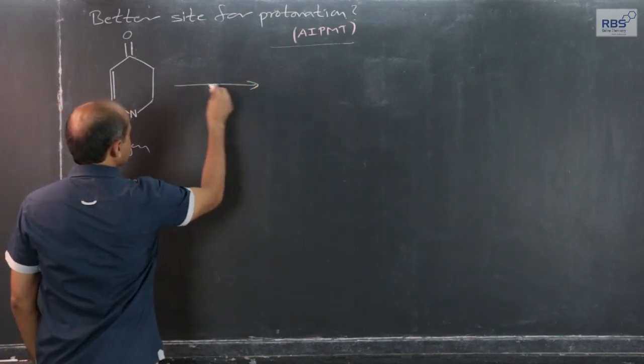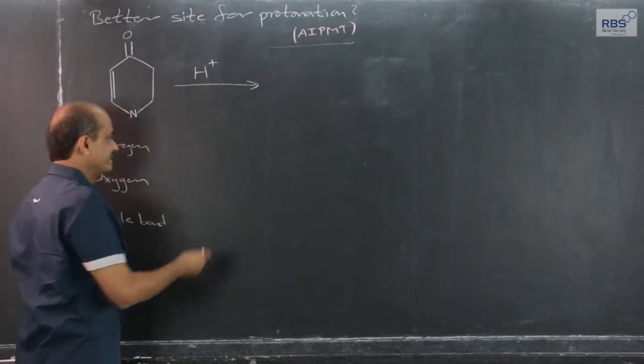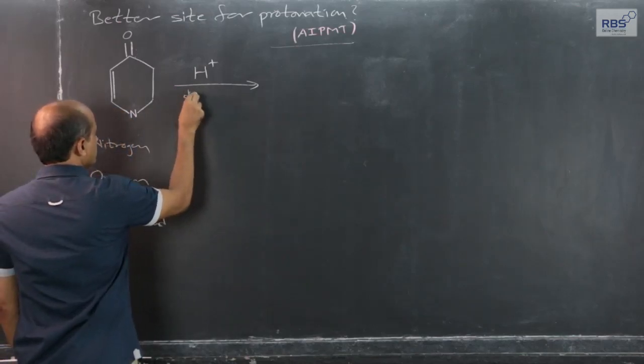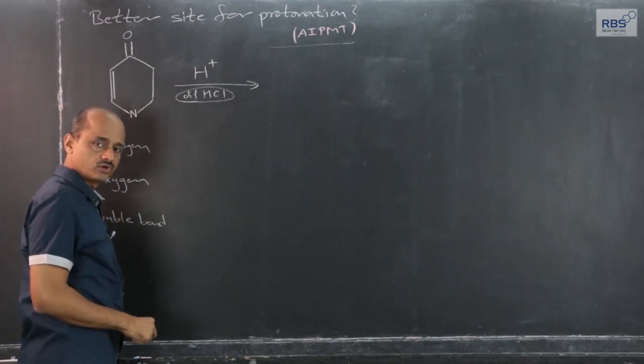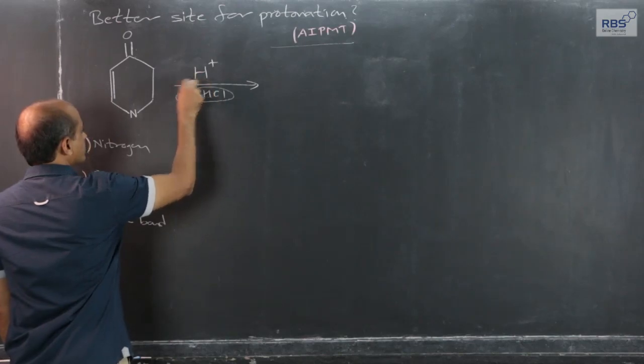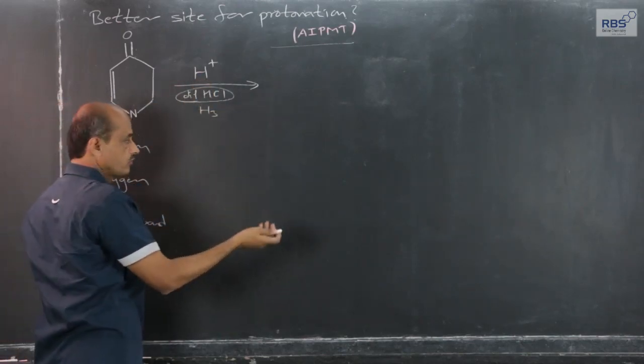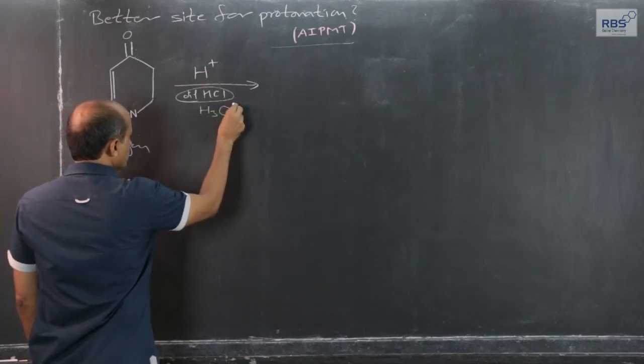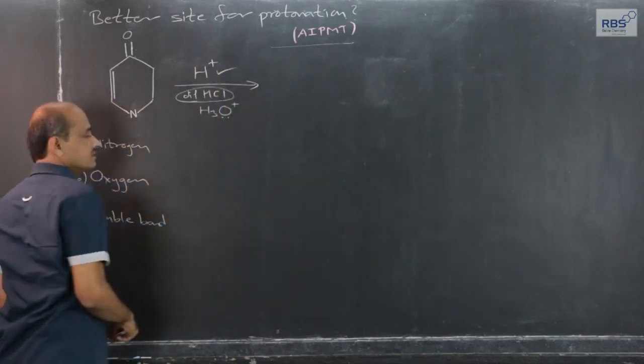Protonation means free H+ ions from any dilute acid. It can be dilute HCl or dilute H2SO4, large amount of water, small amount of mineral acid especially. Free H+ ions from acid are available. If it is dilute with large amount of water, it is written in the form of H3O+ normally. We will use this simple H+ ion.